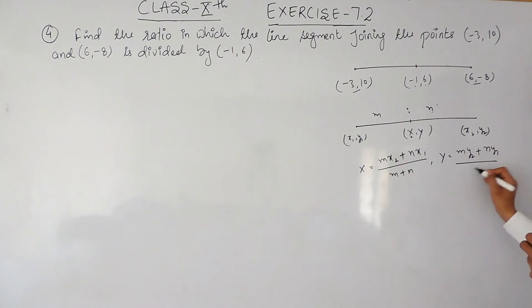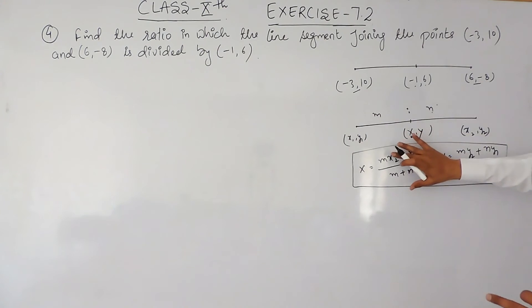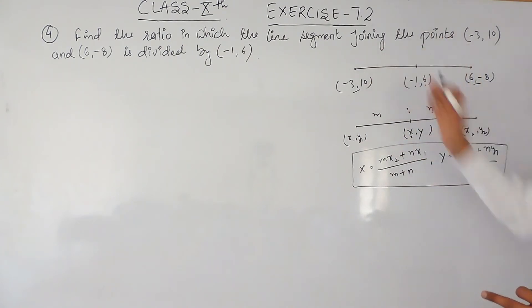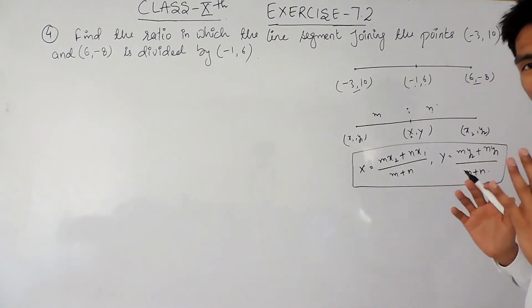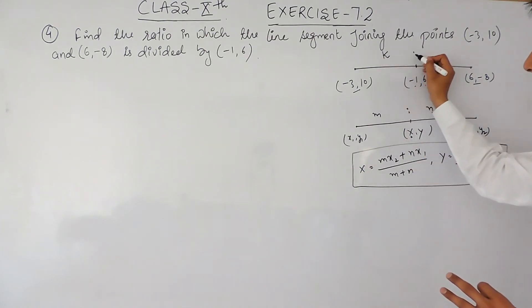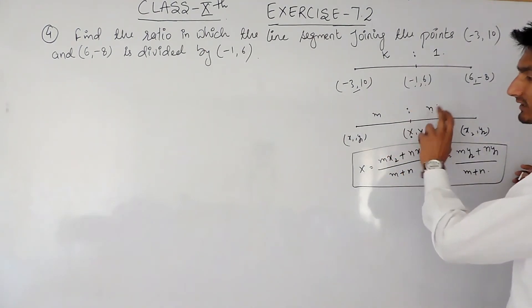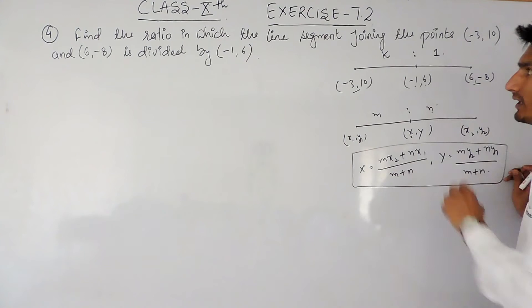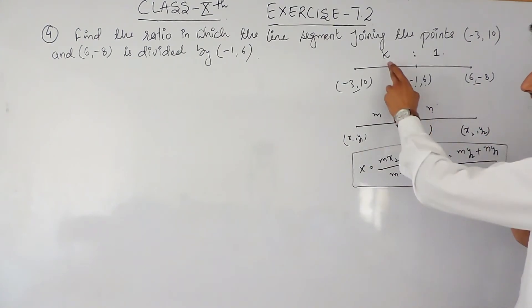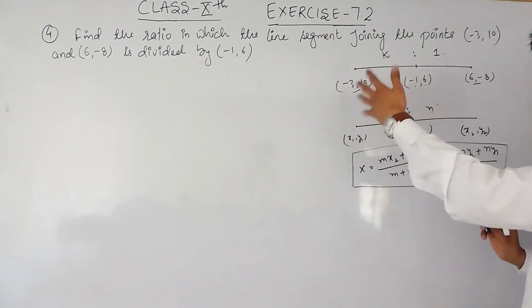This question is the same setup, but here the ratio is missing. One important thing: whenever you have to assume a ratio, always suppose it as a variable is to 1 — never suppose it as two variables, otherwise you won't be able to get your answer. Always remember: assume the ratio as a variable to a constant, and that constant should always be 1. The variable could be any letter: a, b, c, d, k, etc.